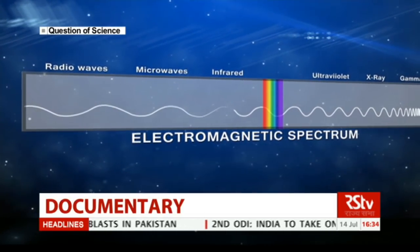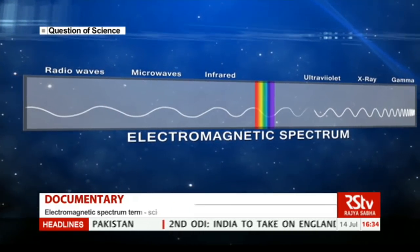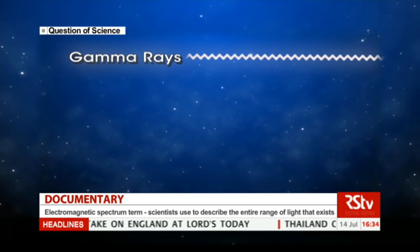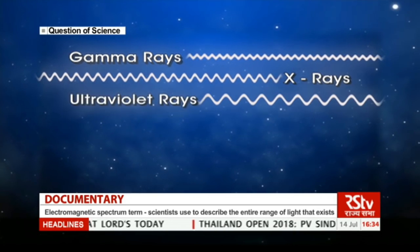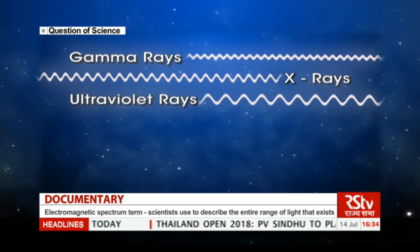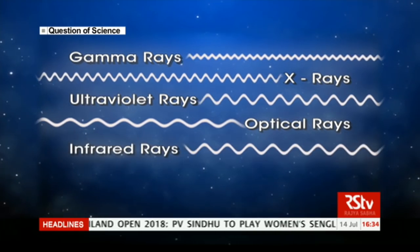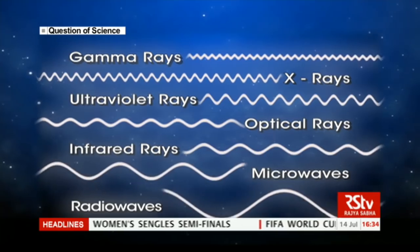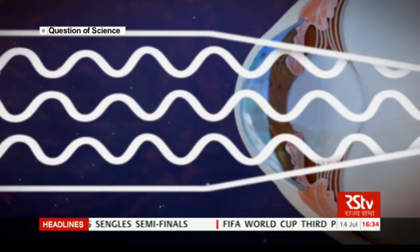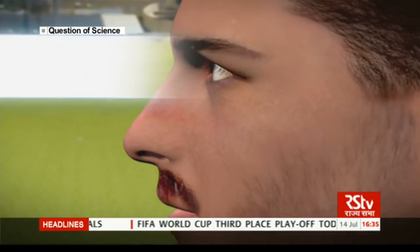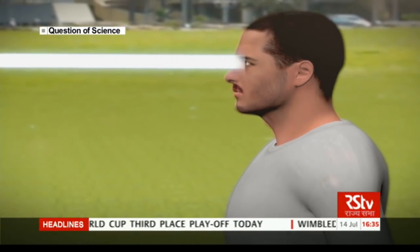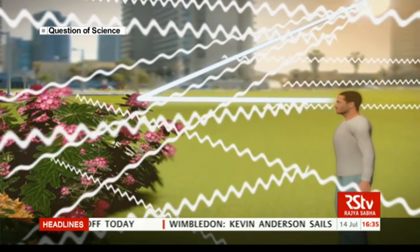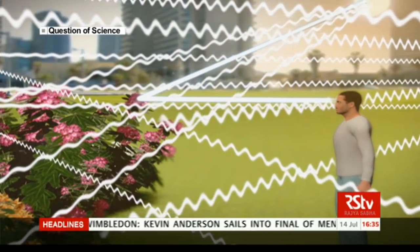The spectrum is arranged in decreasing order of frequency. So we have gamma rays, then X-rays, ultraviolet, optical, infrared rays, microwaves, and finally radio waves. While our eyes can only perceive optical frequencies, science and technology has allowed us to make observations in other frequencies as well.